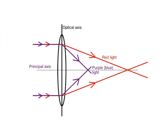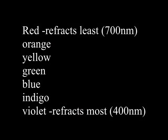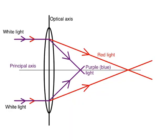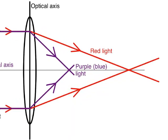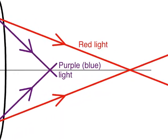We repeat this process for light with a shorter wavelength. Blue light is often used, but it could be any other color. I have chosen violet, because it has the shortest wavelength in the visible range. Violet light comes to focus closer to the lens than red light.